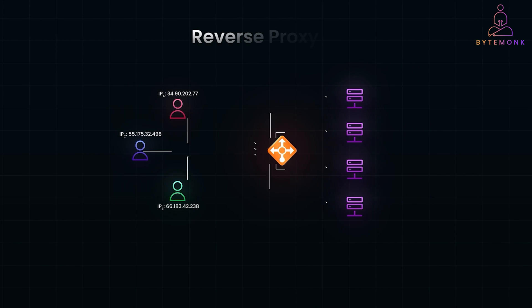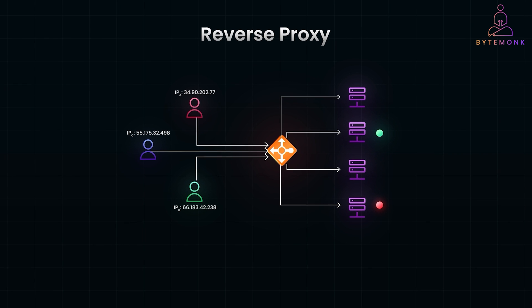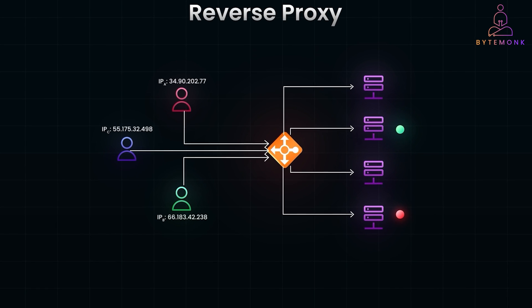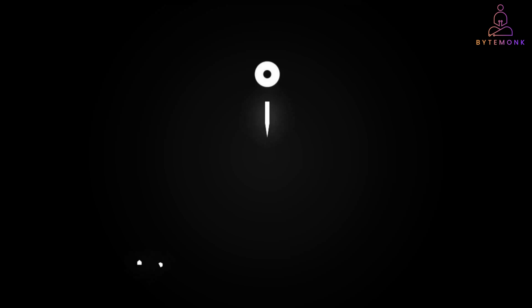In summary, a reverse proxy acts on behalf of servers, reversing the role of a forward proxy which works for clients. While a forward proxy forwards client requests to external servers, a reverse proxy handles incoming client requests, directing them to internal servers.